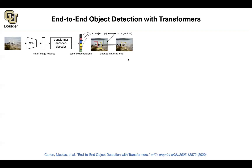Which prediction in your set should correspond to which ground truth in your data for you to be able to train it — that's the only difficulty. The architecture is straightforward. But the main part is writing down a good loss function. You want to write down a set prediction loss for your object detection.